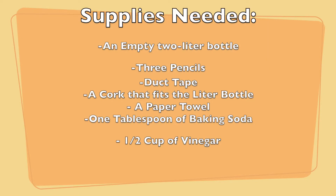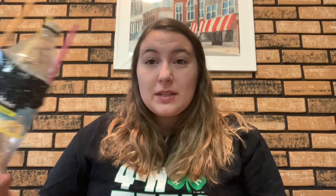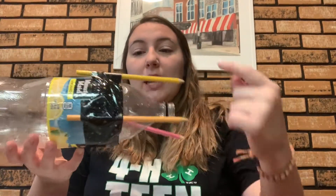Let's talk about the supplies you'll need. First, you need an empty two-liter bottle. You'll also need three pencils and some duct tape. Next, you need a cork that fits inside your two-liter bottle, some paper towels, one tablespoon of baking soda, and about a half cup of vinegar. Once you have all your supplies, the first thing you want to do is build your rocket — take the two-liter bottle and tape three pencils around it to help it sit up straight when launching.